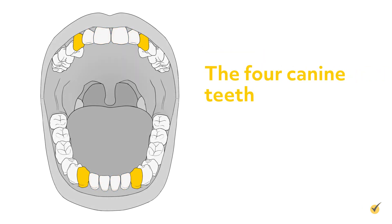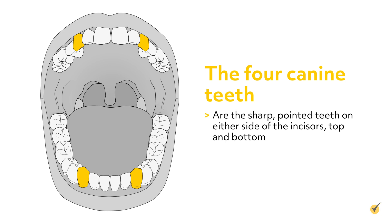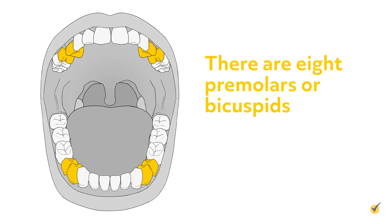The four canine teeth are the sharp pointed teeth on either side of the incisors, top and bottom. They aid in the process of tearing food.